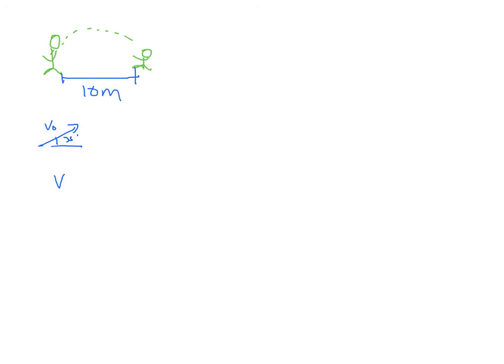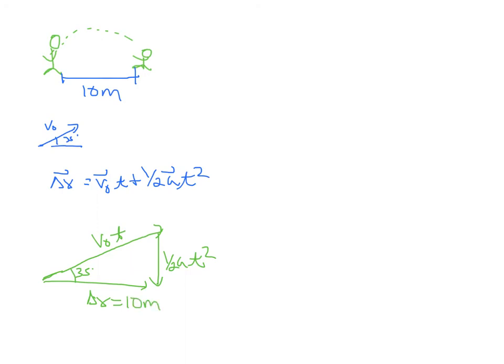What I would use is that delta x equals v naught t plus a half a t squared. If I scale my v naught vector times time and add my acceleration vector, which points down because it's in the same direction as gravity, then the result of adding those two vectors is my displacement vector, which in this case will be 10 meters. Because I'm using the v naught vector relative to the ground, this angle is 35 degrees, and I know this side of the triangle is 10 meters.